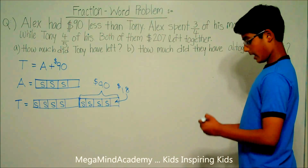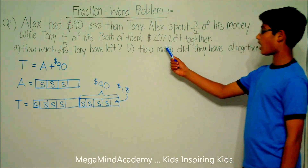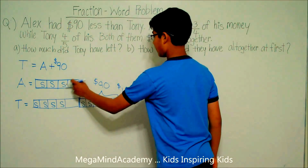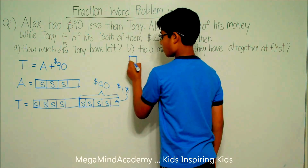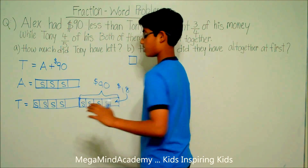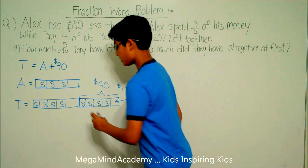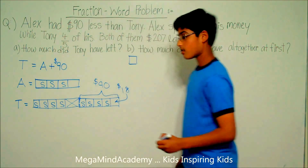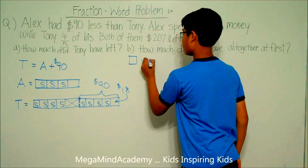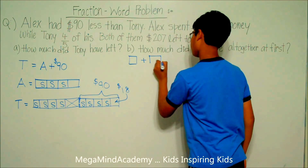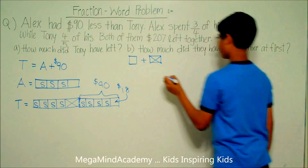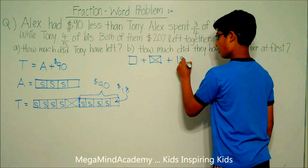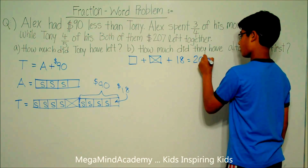Now we know that both of them had $207 left altogether. So this means that Alex's unit plus Tony's unit — which is not the same as Alex's unit, so Tony's unit is equal to a box — meaning: unit plus box plus $18 is equal to $207.